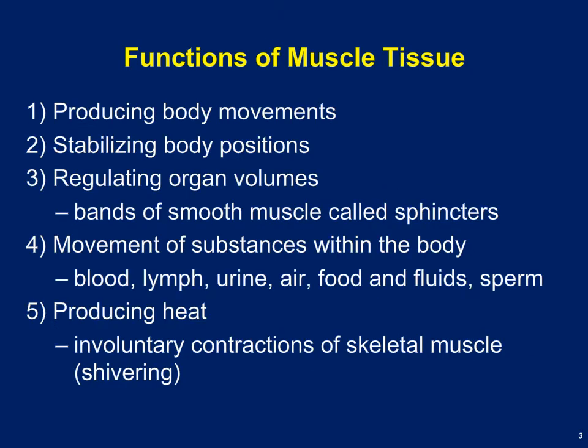Functions of skeletal muscle include producing body movements. For example, when your biceps brachii muscle contracts, your elbow will flex, reducing the angle between your radius and ulna and your humerus. Another function of muscle tissue is to stabilize joints and body positions — to hold posture and hold you upright.